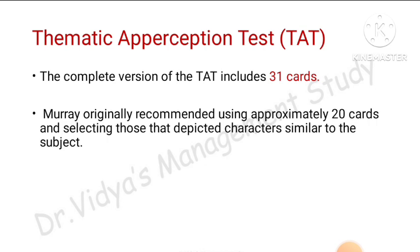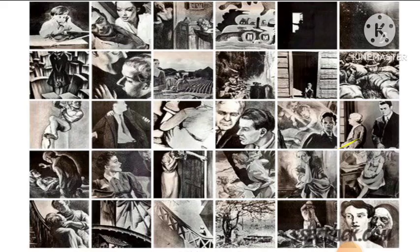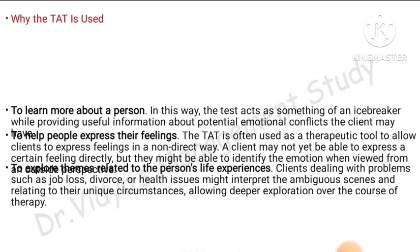The TAT originally had 31 cards in total. Murray recommended using approximately 20 cards, selecting those that depict characters similar to the subject. Compared to the Rorschach test which had 10 inkblot cards, the TAT has 31 cards. These cards contain characters and situations, and the subject must tell a story based on them.